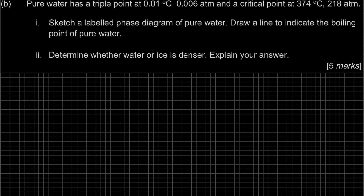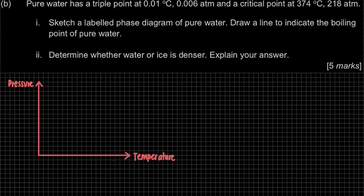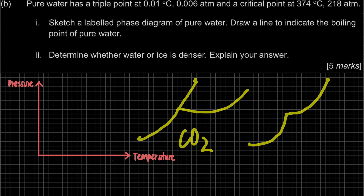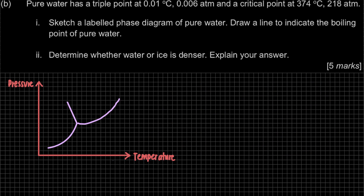A phase diagram has pressure on the y-axis and temperature on the x-axis. The shape looks like branching lines. We learn two phase diagrams: CO₂ and H₂O. The key difference is the melting curve — the solid-liquid boundary. For CO₂, this curve slopes to the right, but for H₂O, it slopes to the left. Make sure to draw the correct shape for water.